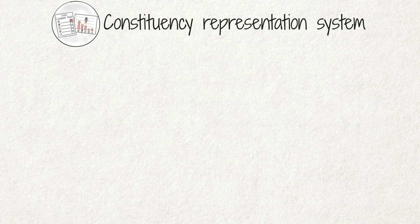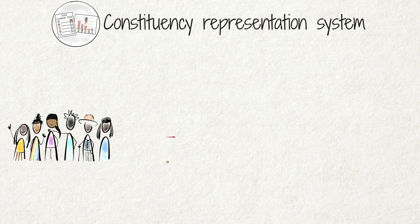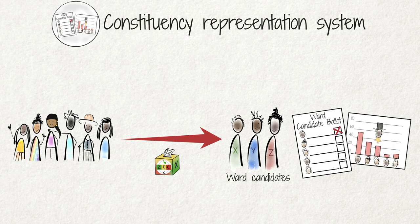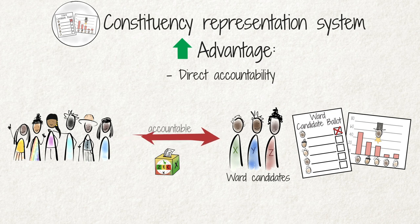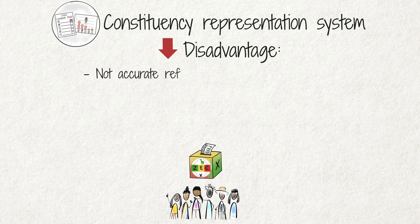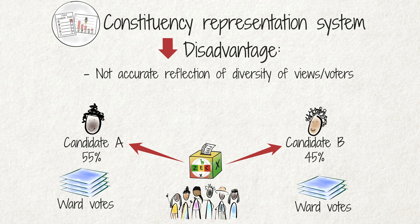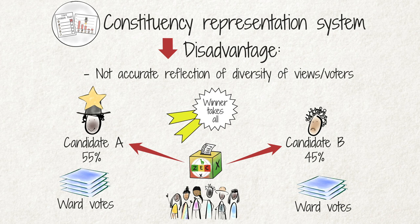Under the Constituency Representation System, voters vote for a candidate who may or may not be aligned to a political party, and the candidate with the highest number of votes wins the election. The advantage of this system is that each elected representative is directly accountable to the voters in his or her constituency. The disadvantage is that it is not an accurate reflection of the diversity of views of the voters. For example, if candidate A gets 55% of the votes and candidate B gets 45%, candidate A wins the ward seat and candidate B gets nothing. That is why it's called a winner-takes-all system.